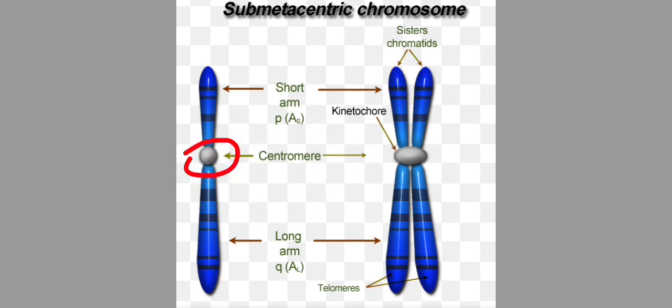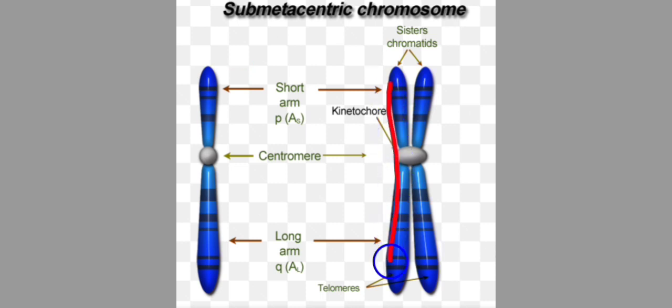The number of chromosomes depends on the number of centromeres — one centromere means one chromosome count. The chromatid is replicated in S-phase. We have studied in S-phase that DNA is replicated, which means the chromosome is also replicated. Before replication it is a single strand; after S-phase we have two sister chromatids joined at the centromere.